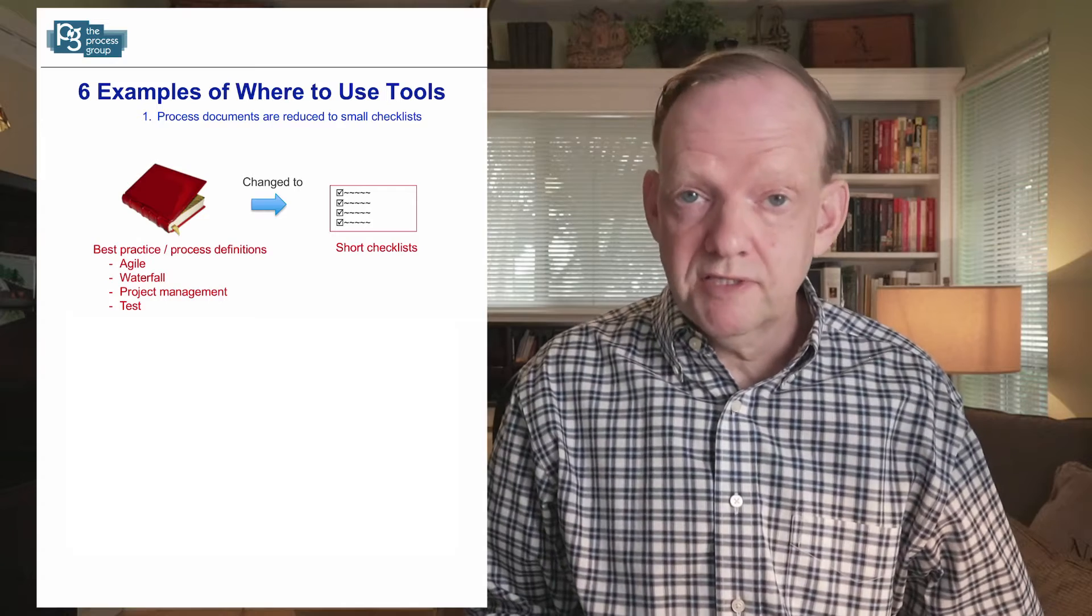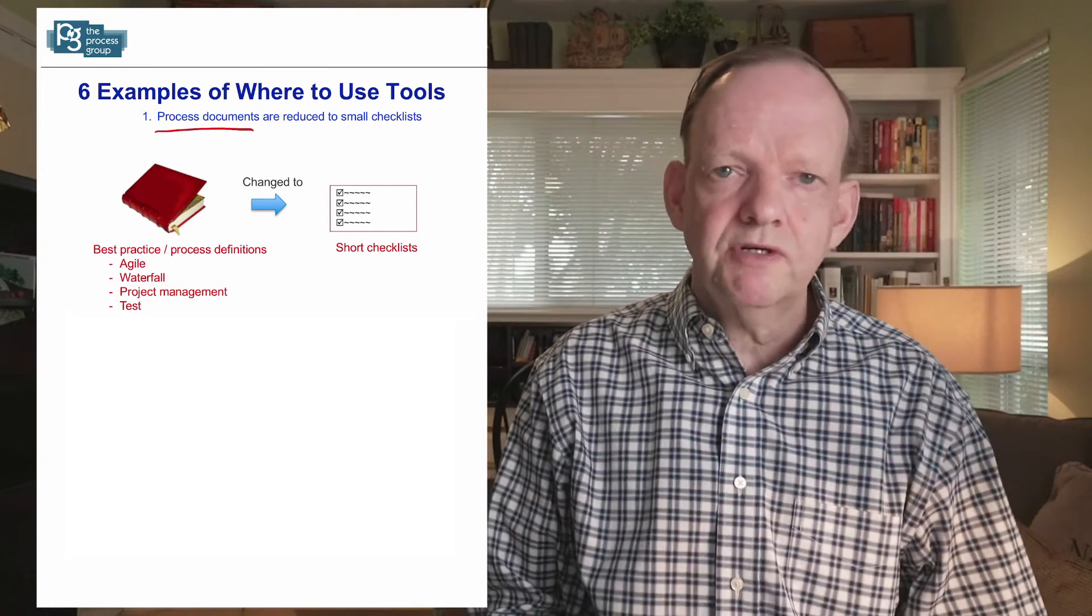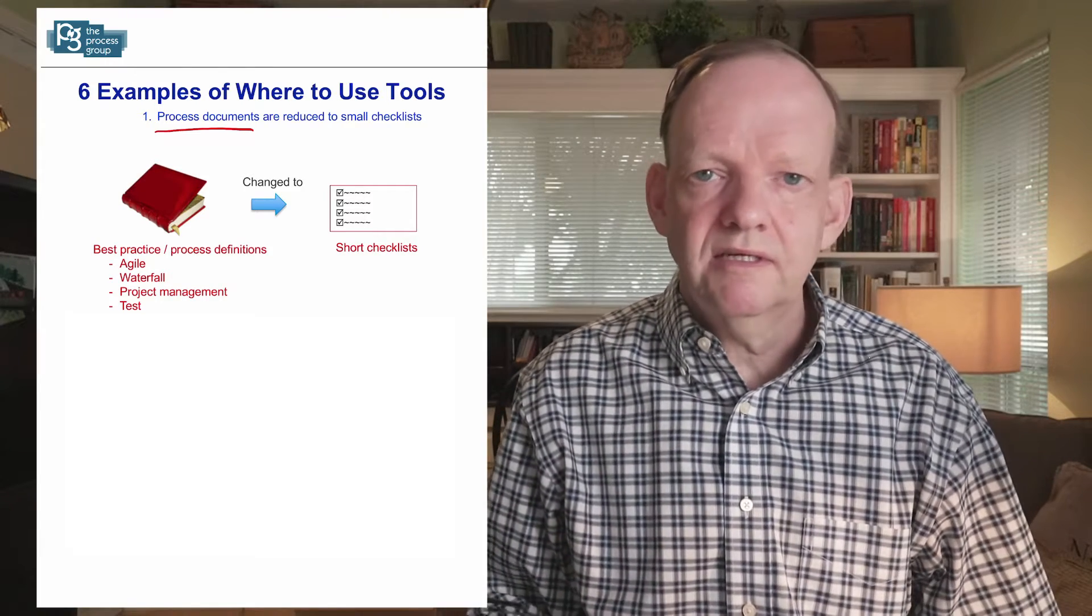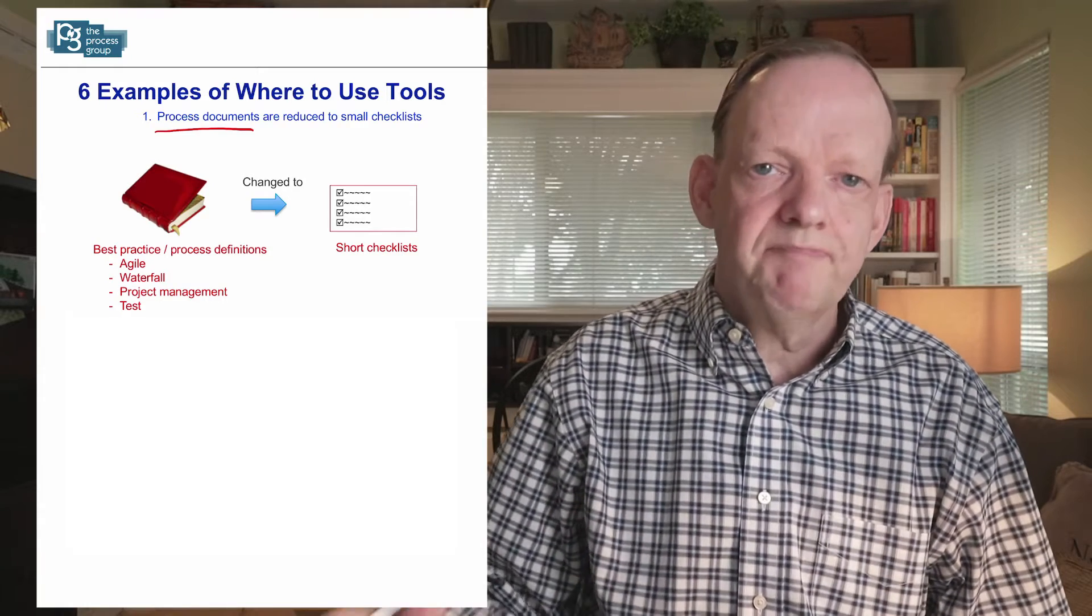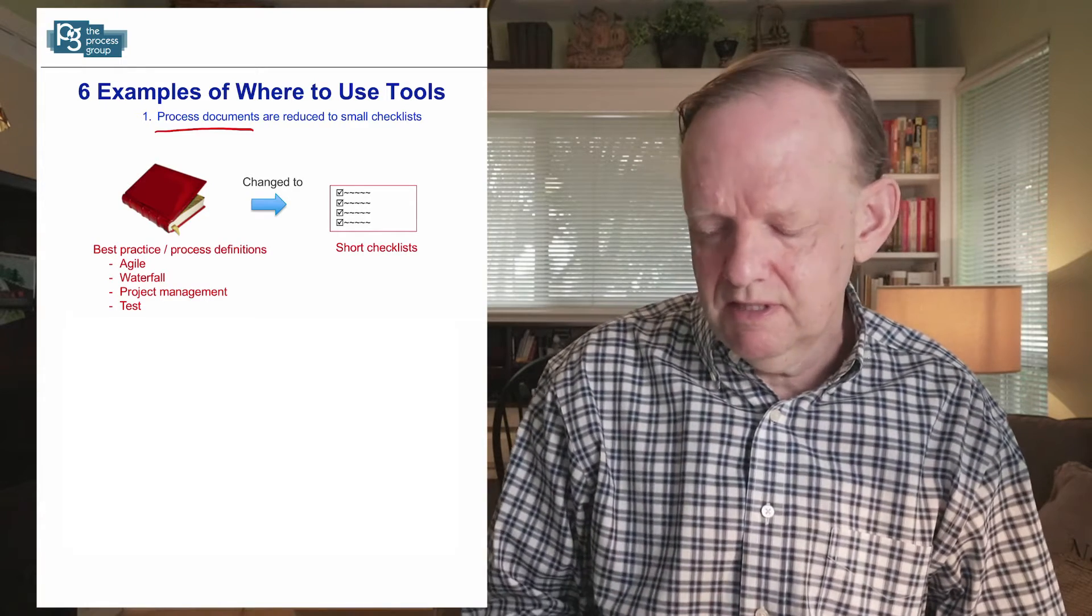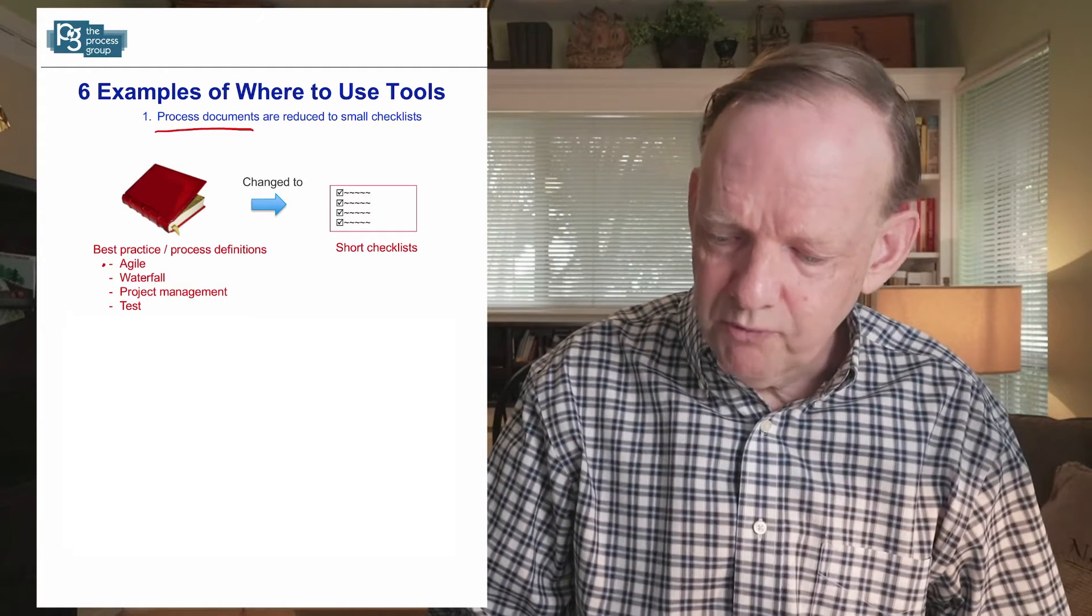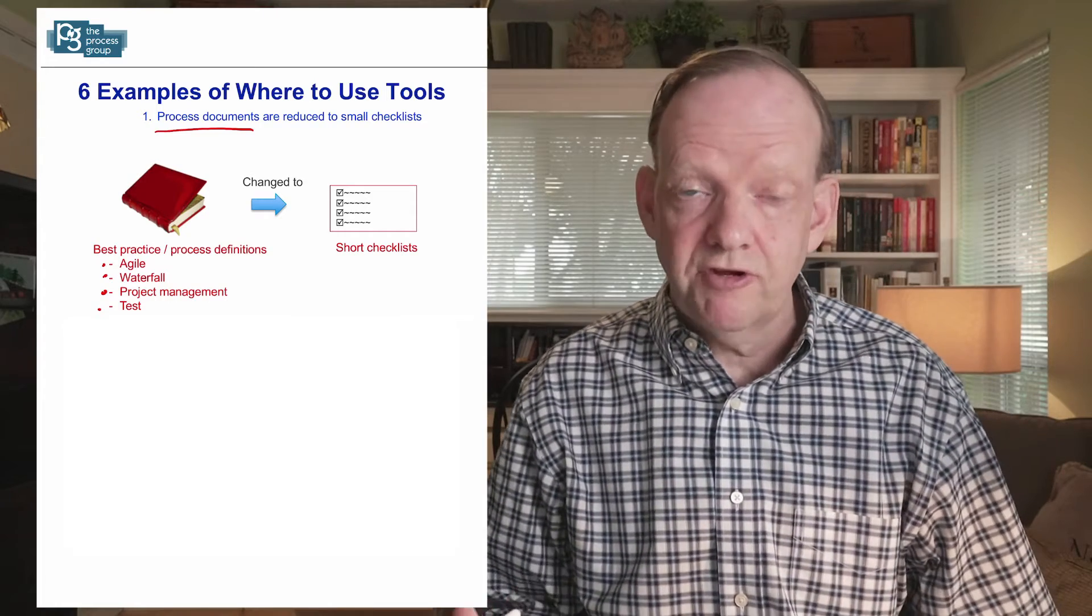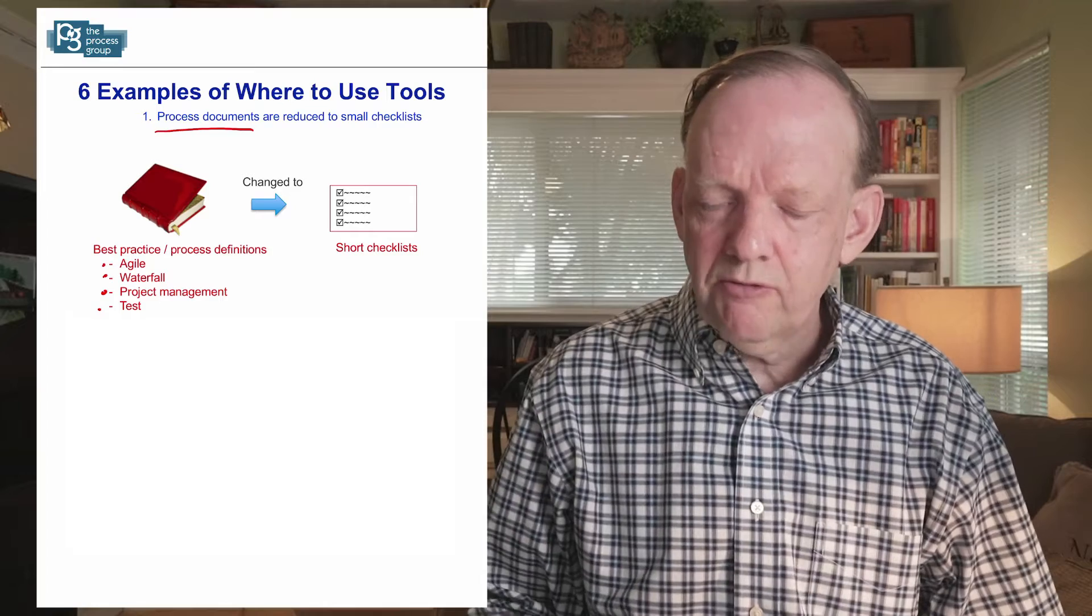So the first example I'm going to discuss are process documents. Typically, teams that are process mature will have a definition of how they do their work so they can repeat that, study it, improve it, and not slip backwards and lose their gains. They may be defining how they do agile, waterfall, project management, tests, or requirements. When they have really figured out how to do something well, they will write it down.